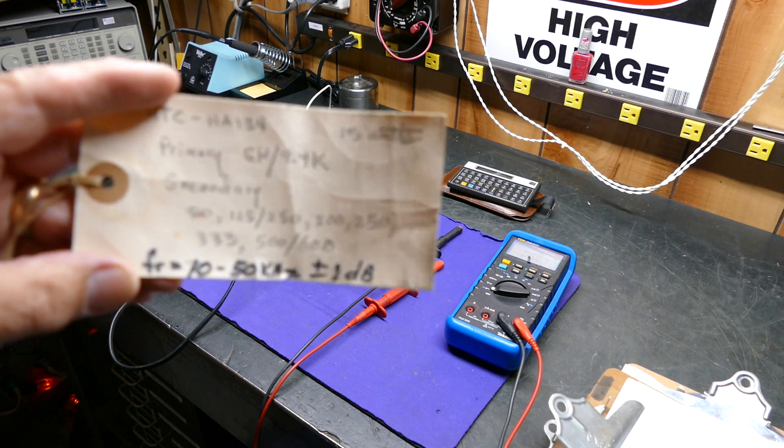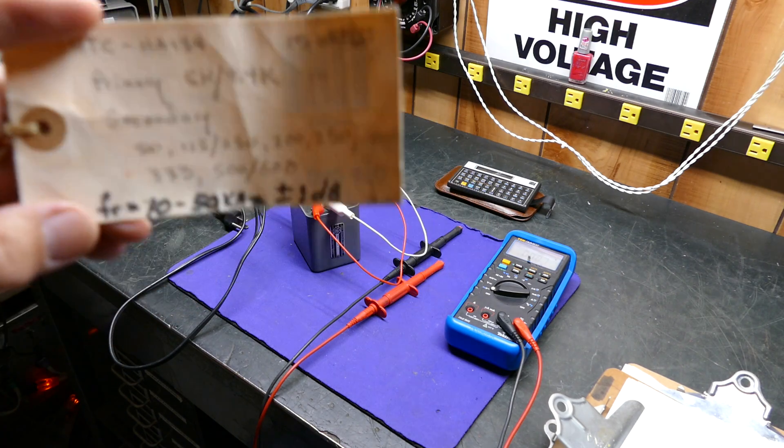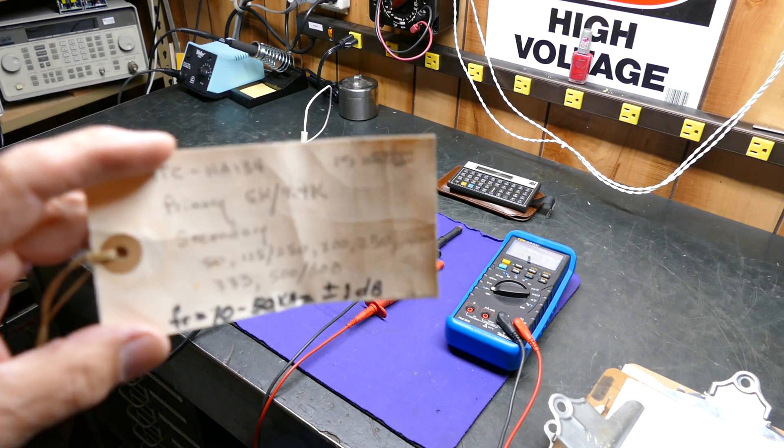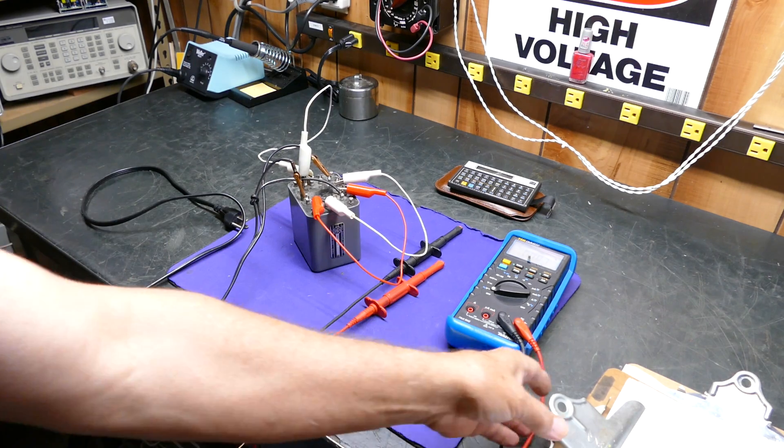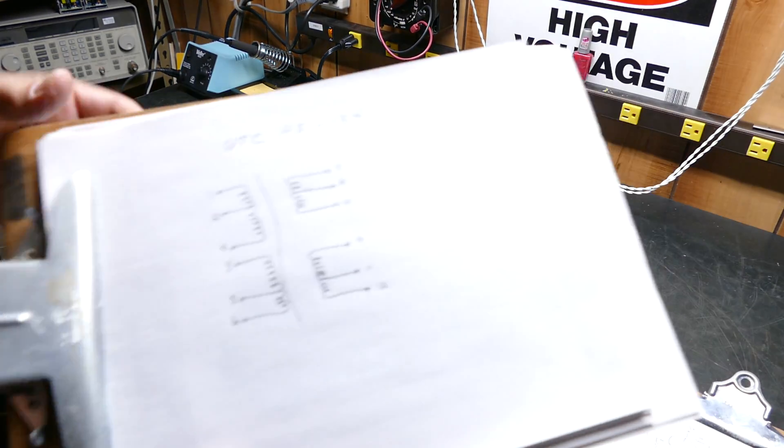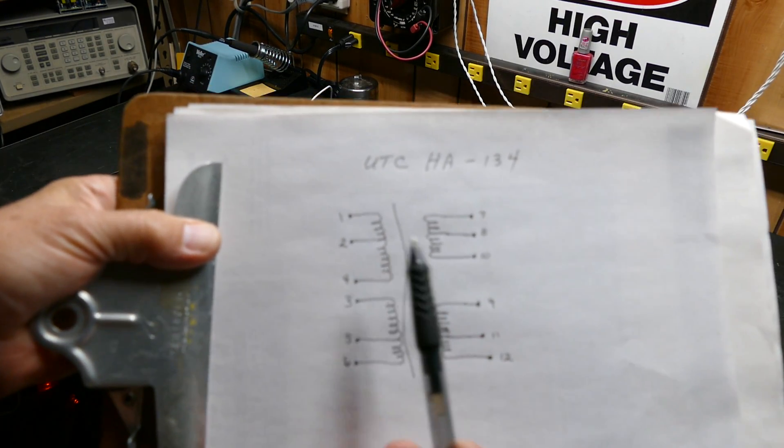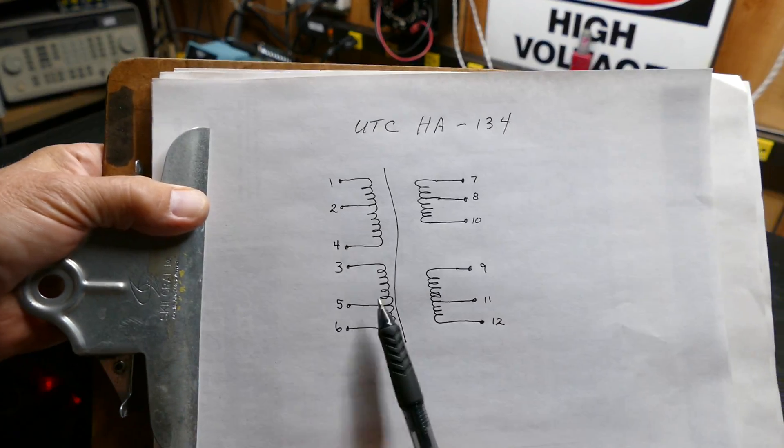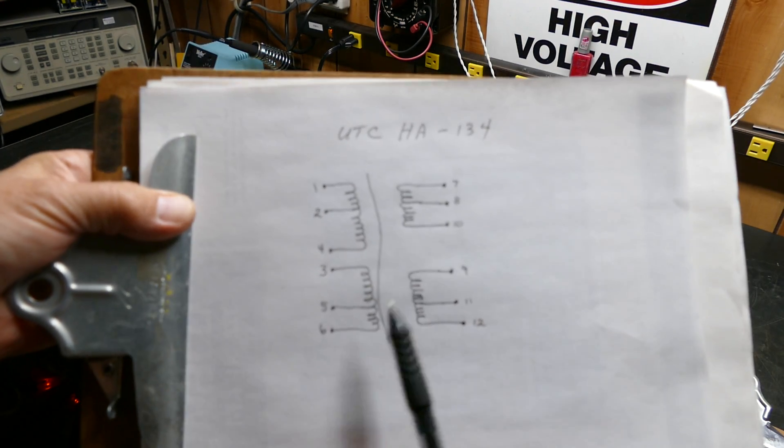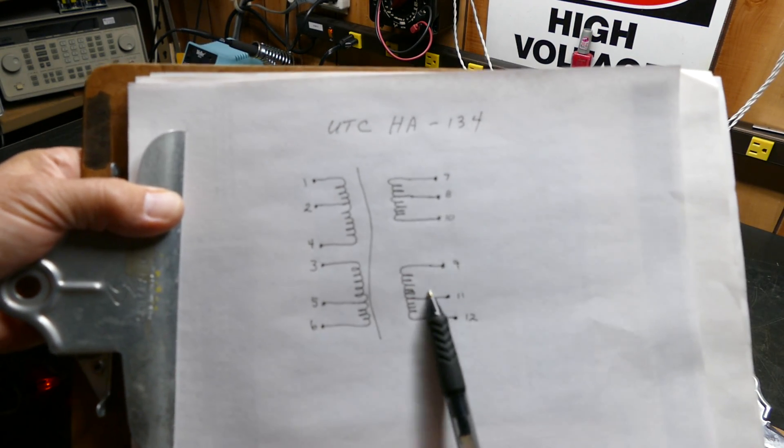Well, I've got UTC catalogs. I've looked it up online. I can find bits and pieces of this thing everywhere, but I can't find the real thing. So I finally decided to figure it out myself and here's the truth. Here's the way it's wired. This primary and this primary are duplicates. And this secondary and this secondary are duplicates.